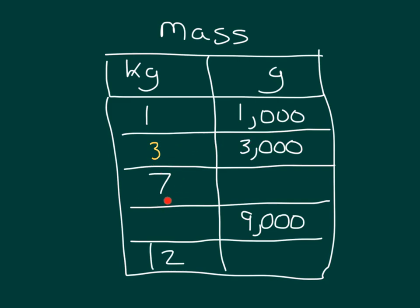If we had 7 kilograms, how many grams would that be? Can you write that in? Did you say 7,000? When we had 9,000 grams, it would be how many kilograms? Right, 9. 9 kilograms does equal 9,000 grams.